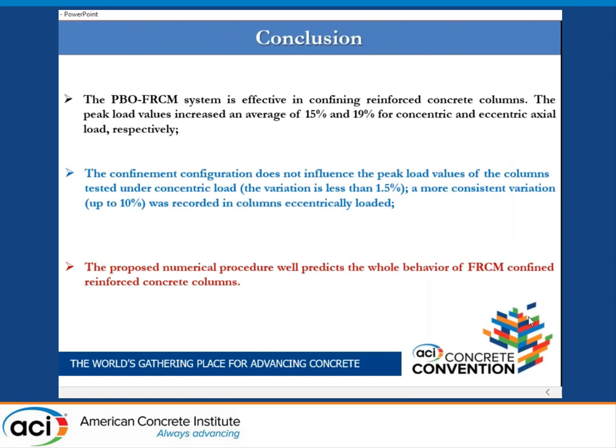Finally, the following concluding remarks can be drawn. The PBO-FRCM system is effective in confining reinforced concrete columns. The peak load value increases on average by 15% and 90% for concentric and eccentric loading, respectively. The confinement configuration does not significantly influence the peak load for columns tested under concentric load — the variation is less than 1.5%. A more consistent variation of 10% was recorded for columns under eccentric load. The proposed numerical procedure well predicts the whole behavior of FRCM-confined reinforced concrete columns.